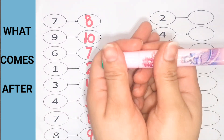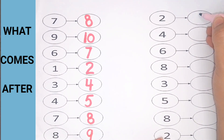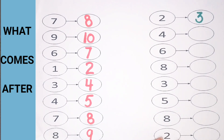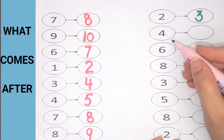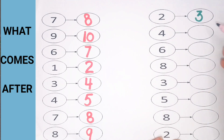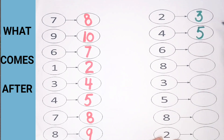2. What comes after 2? 3 — number 3. Next is 4. What comes after 4? Number 5 — 5 comes after 4.